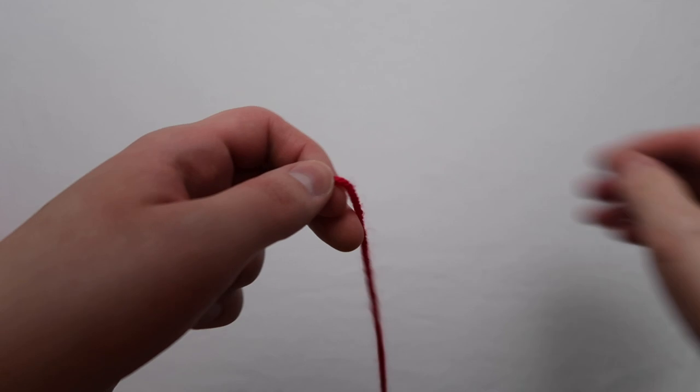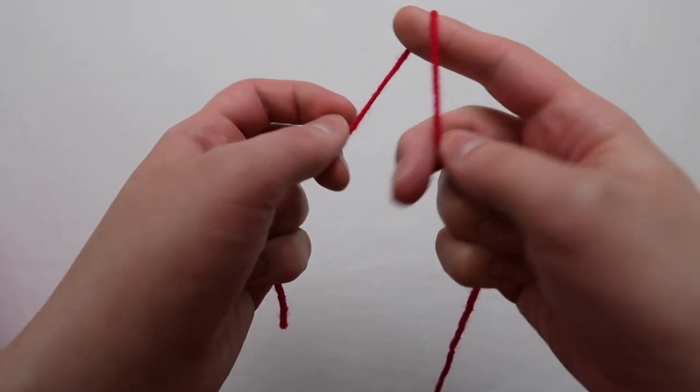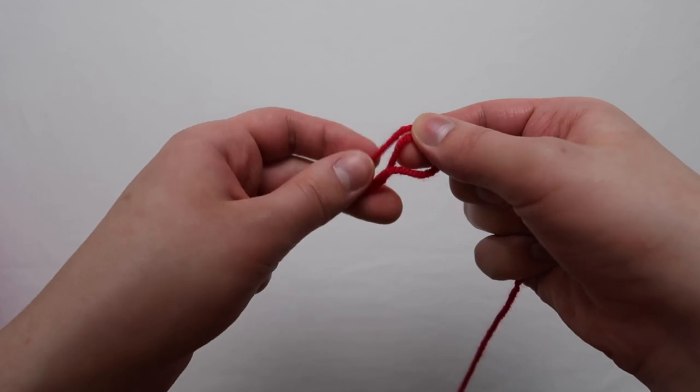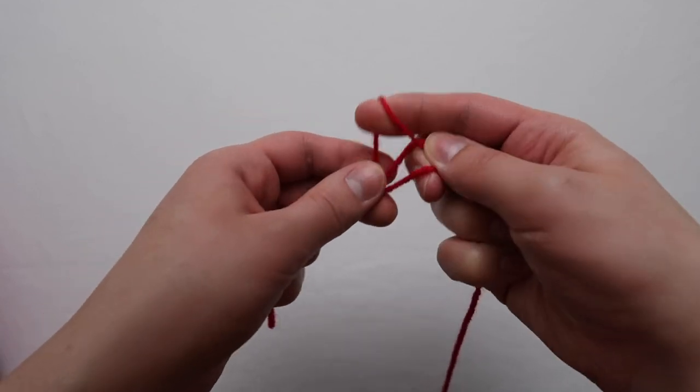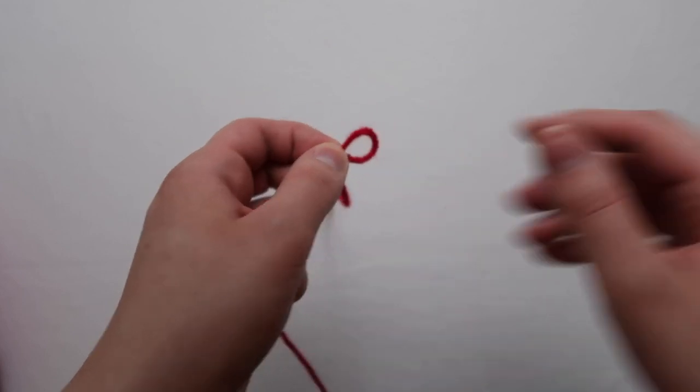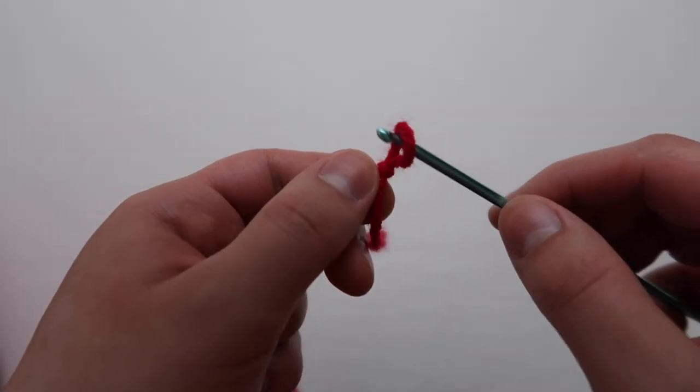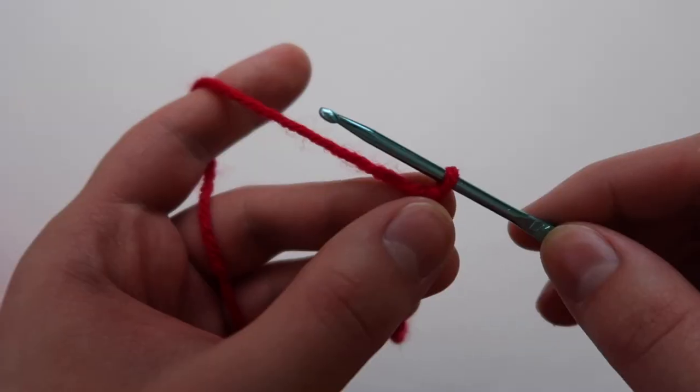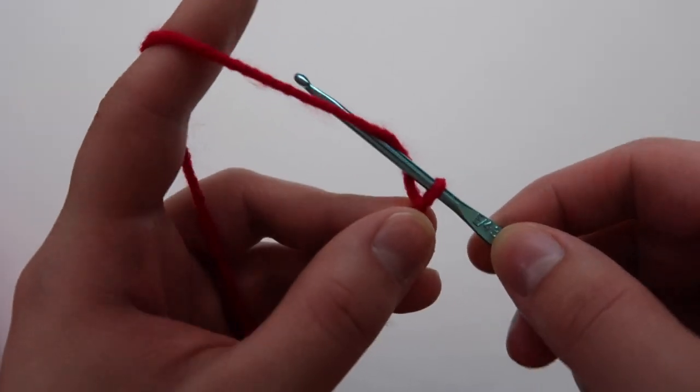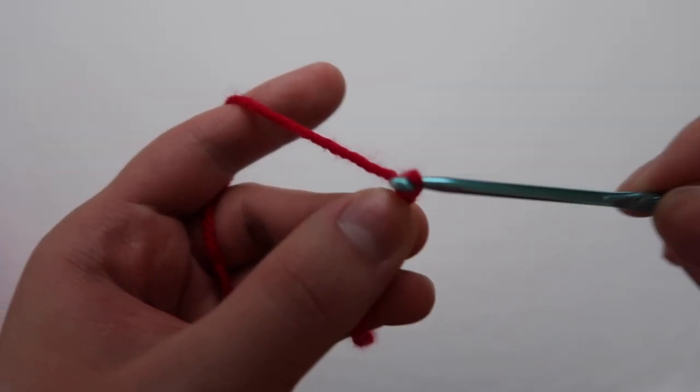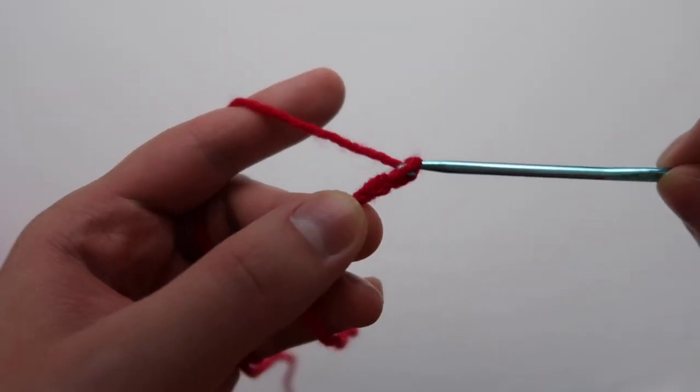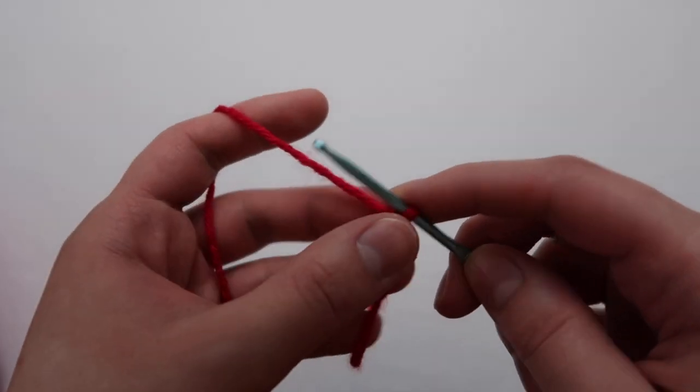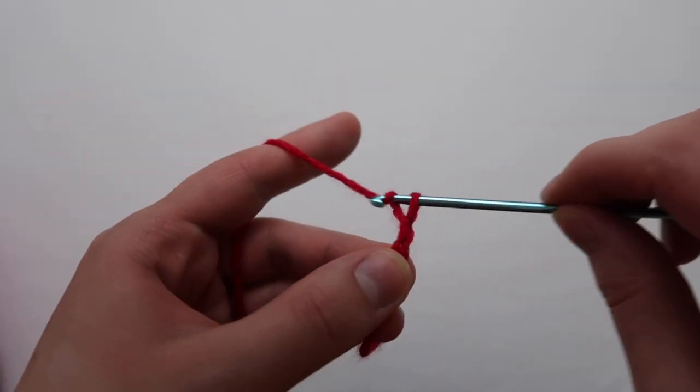To start off we're going to make a slip knot. You're going to make a loop, then put the string behind the loop and pull it through. Put that slip knot onto your hook and tighten it. Hold the yarn in your hand and I like to pinch the base when I'm making a chain. For this project you're going to make 46 chains and that gives you 45 stitches.